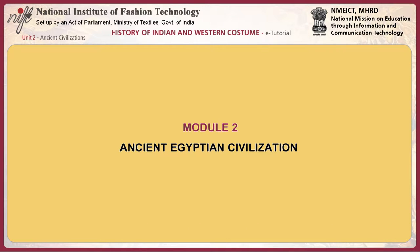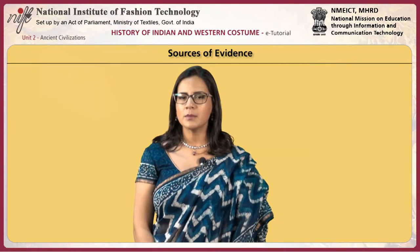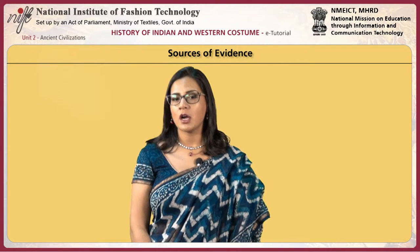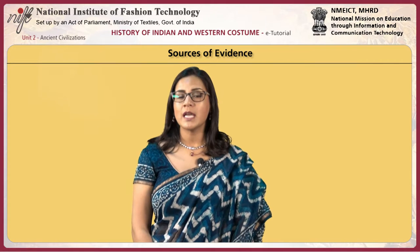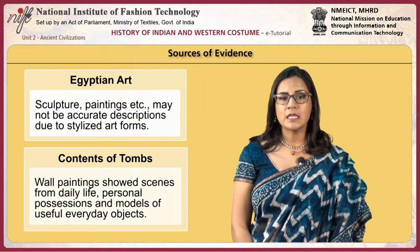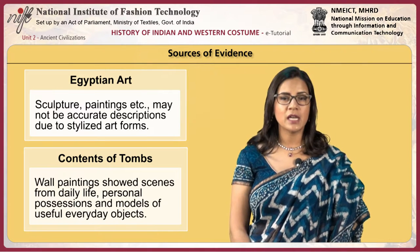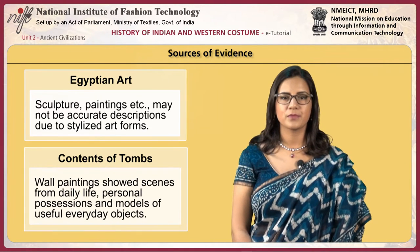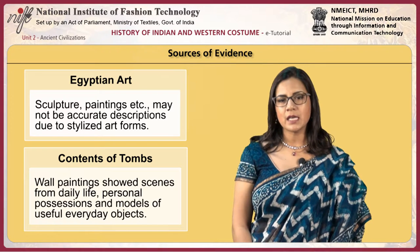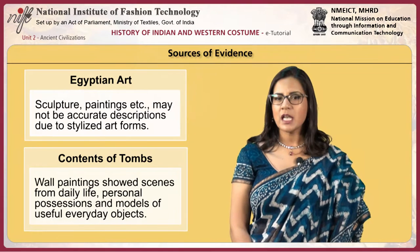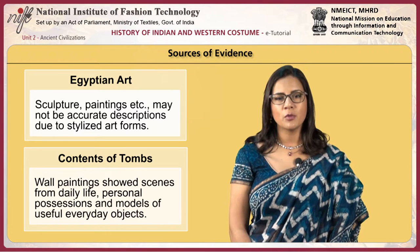This module focuses on ancient Egyptian civilization, costume and culture. The main evidence of ancient Egyptian civilization is from Egyptian art, the contents of tombs and decorative motifs. Sculpture, painting, etc. may not be accurate descriptions due to stylized art forms. Wall paintings inside tombs showed scenes from daily life, personal possessions and models of useful everyday objects.